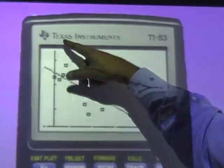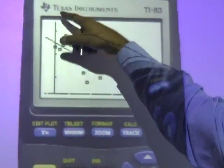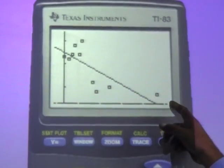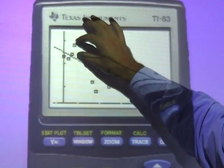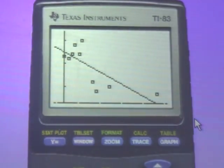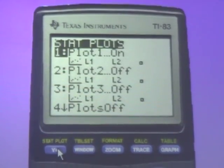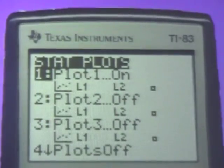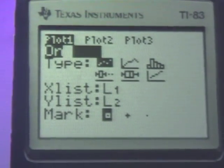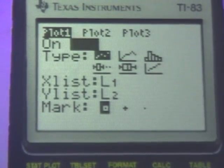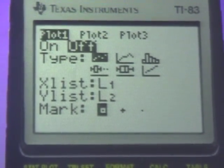Right now I'm plotting X versus Y. I'm plotting absences versus GPA, but I want to plot absences versus residuals. So these guys will be positive, these guys will be negative. So I'm going to go into stat plot, and I'm going to keep plot one, we'll keep plot one where it's at right now. I'm going to shut it off.